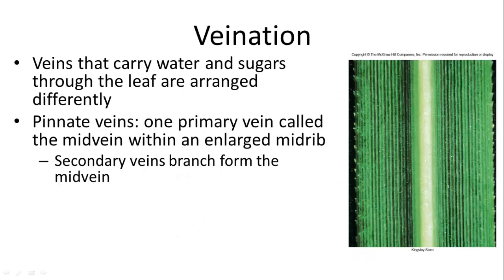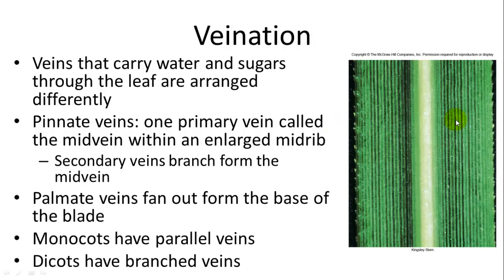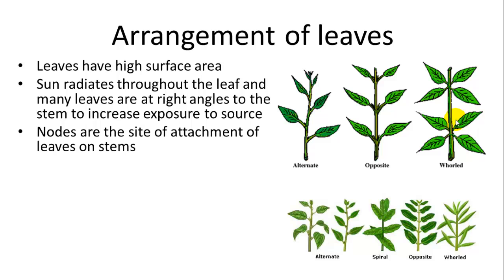Throughout leaves, you also have veins, which are extensions of the xylem and phloem found in the stems. Veins can be arranged differently: parallel veins are indicative of monocots, while branched veins are indicative of dicots. Pinnate veins have one primary mid vein with an enlarged midrib, and secondary veins branch from it. Palmate veins fan out from the base of the blade, all from the same point.